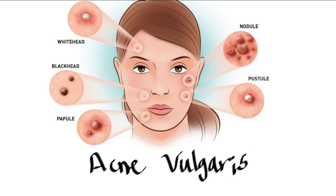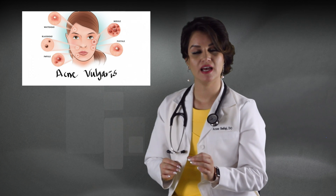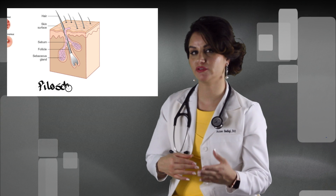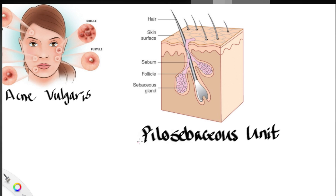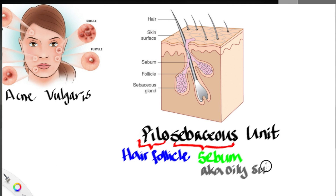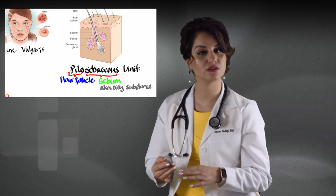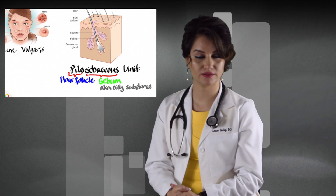Acne vulgaris is a common skin disease that involves the blockage and/or inflammation of the pilosebaceous units. Pilosebaceous units refers to the hair follicle, and sebum is the oily substance that is produced by the accompanying glands that lubricates the skin and hair follicles.